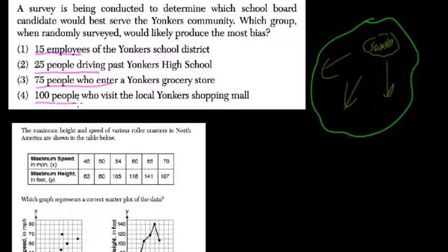A hundred people who visit the shopping mall. Since most people are able to go shopping, it's not going to represent everybody in the community, especially the people who can't afford to go shopping, but a hundred people there will be better than any other choice here, or less biased.